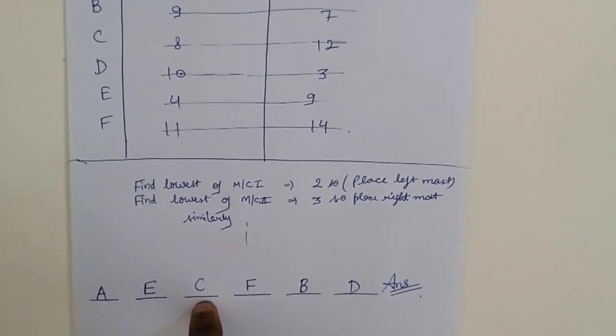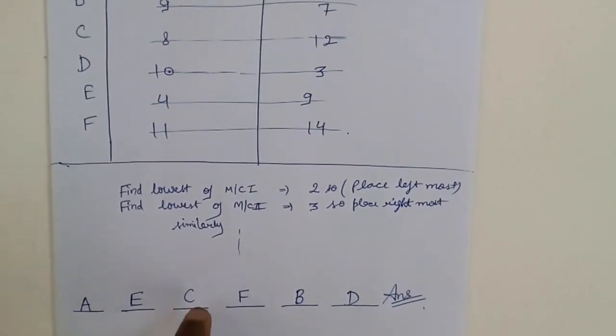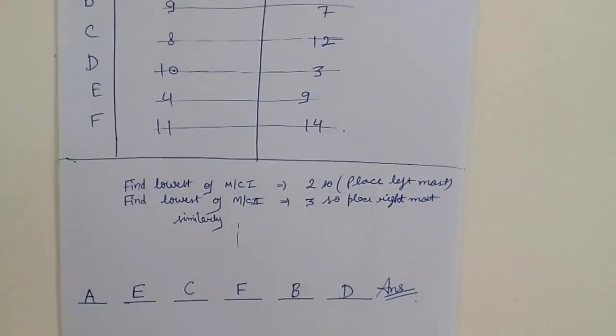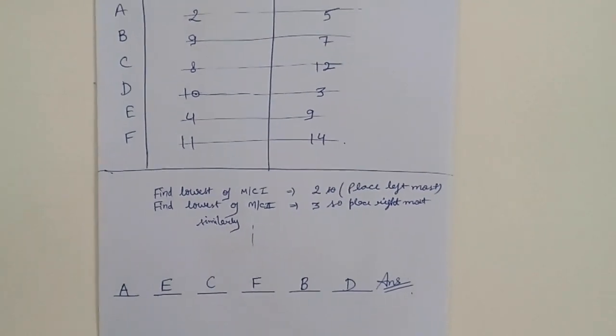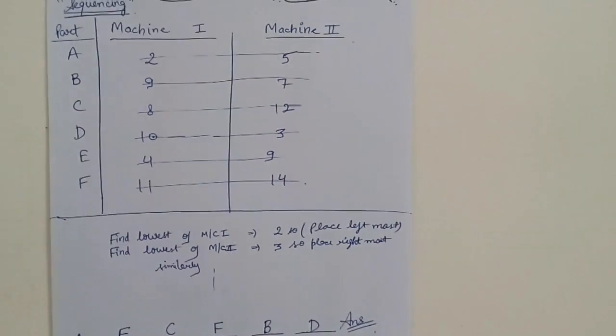So the answer would be A, E, C, F, B, D. So we have to sequence in this order: A, E, C, F, B, D. This is the answer. This was the video regarding Johnson's algorithm.